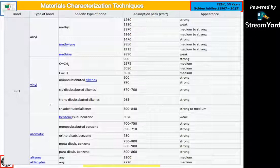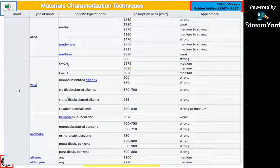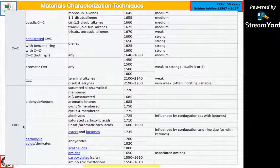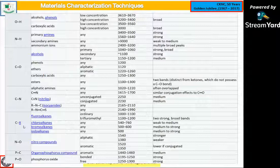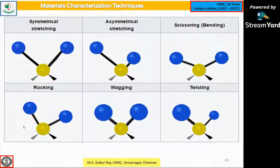A detailed classification is given in a tabular column. Vibration stretching modes for alkanes, alkenes, and aromatic compounds include single bond and double bond stretching. Conjugated polymers, benzene ring structures, aldehydes, and ketones can also be identified. From the vibration modes, we can determine C=O, C=O stretching, and single bond vibrations. Bending vibration modes include rocking, wagging, twisting, and symmetrical and asymmetrical vibrations.